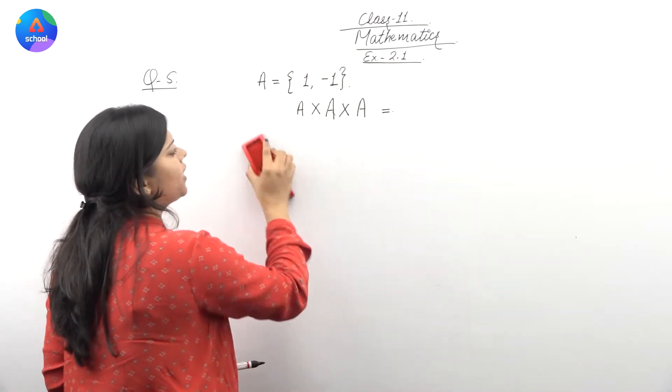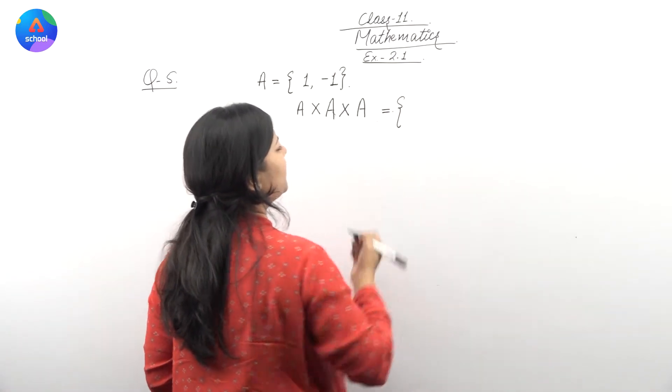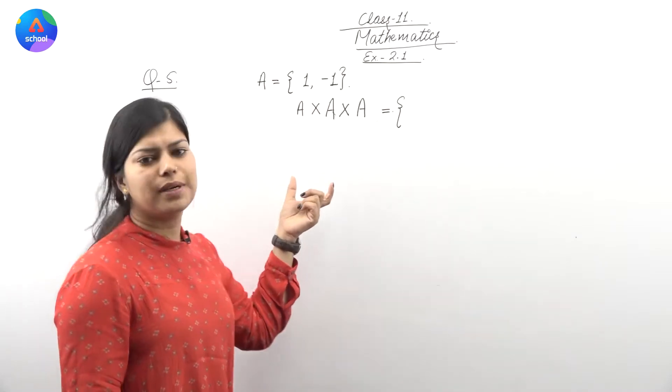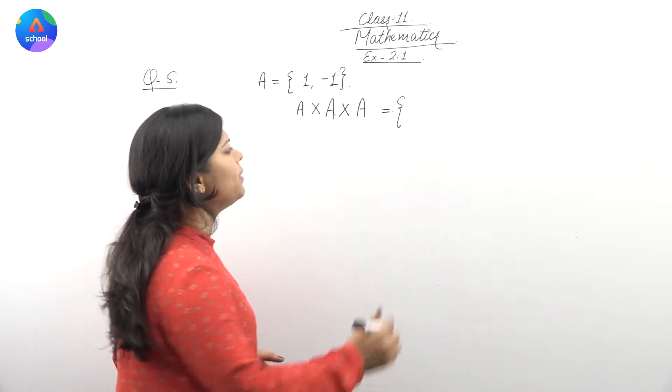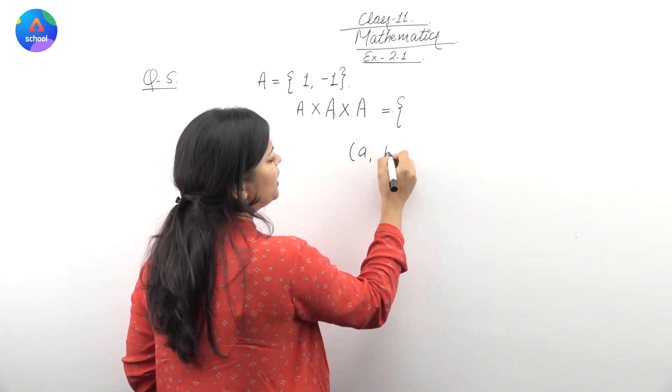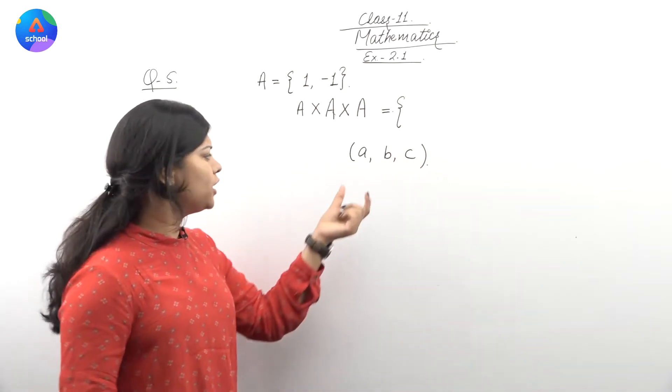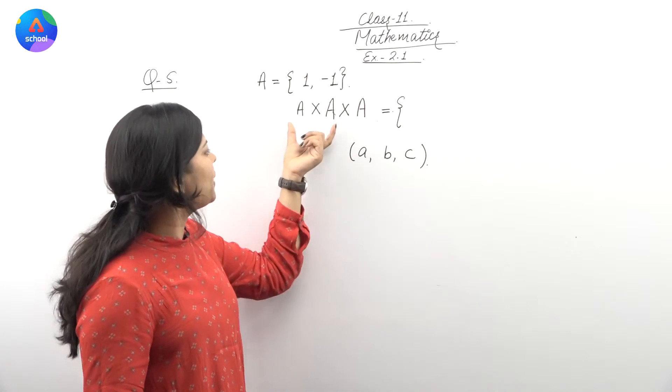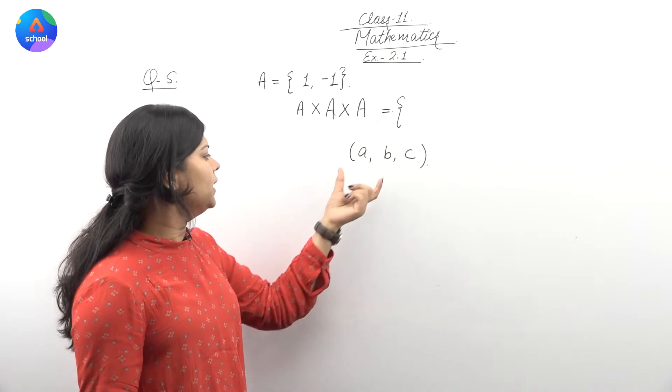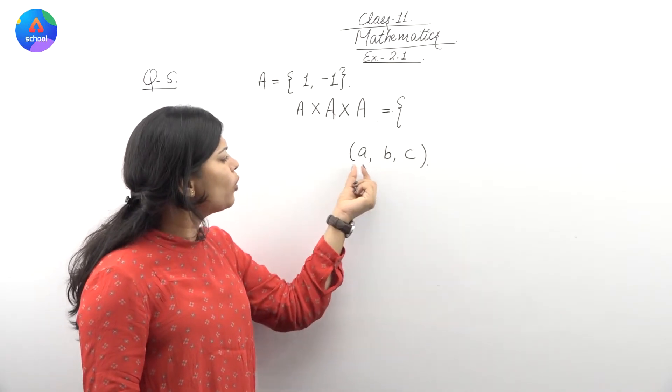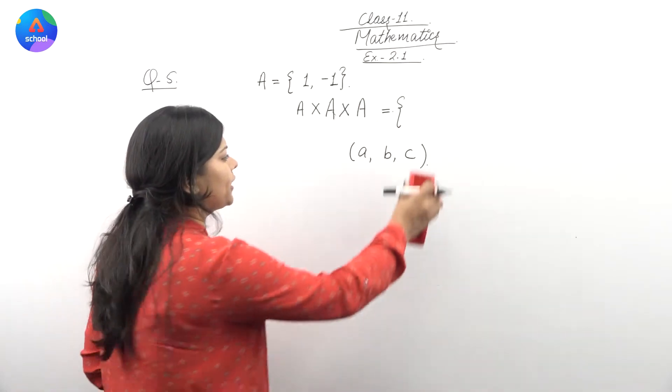To ab sab se pehle, hum elements find out karthay, A cross A cross A kai. Isme humare paas, joh ordered pairs aengue, wou ordered triplets hoonga, yani ki, humare paas ek joh element hooga, wou kis type ka hooga: A, B, C type ka. Abhi dekhaun kya karthay, ordered pairs yani ki, dho le re raha hai na, kyunki humare paas humain A cross A find out karna tha. Ab humare paas, kaise benengue, triplets benengue.